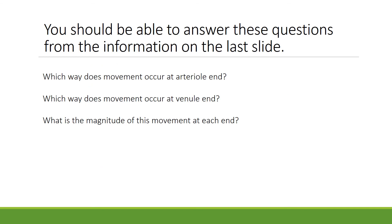Based on the previous slide, you should now be able to answer these questions. The magnitude of movement at the arterial end is 10 mmHg, and since it favors filtration, this is the outward movement of fluid. The magnitude of movement at the venule end is 7 mmHg and favors reabsorption, so it's the inward movement of fluid.